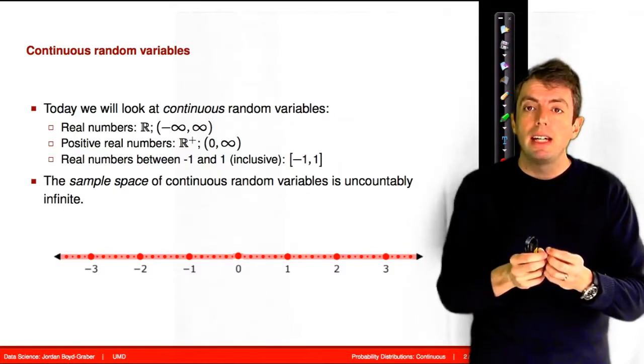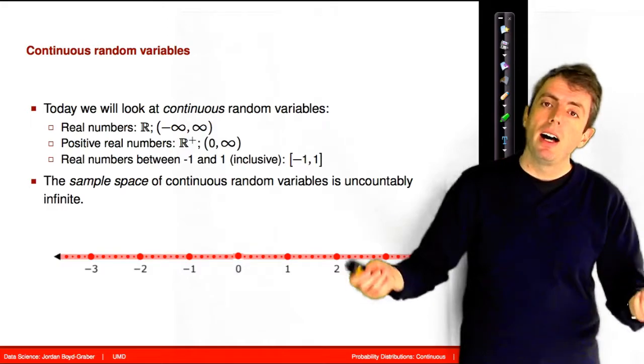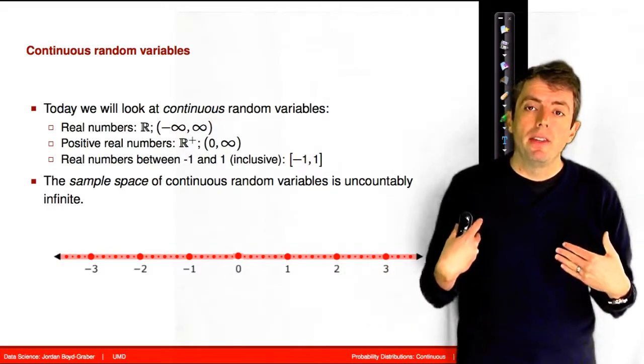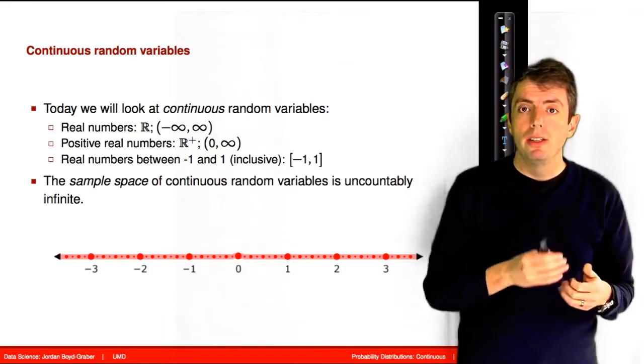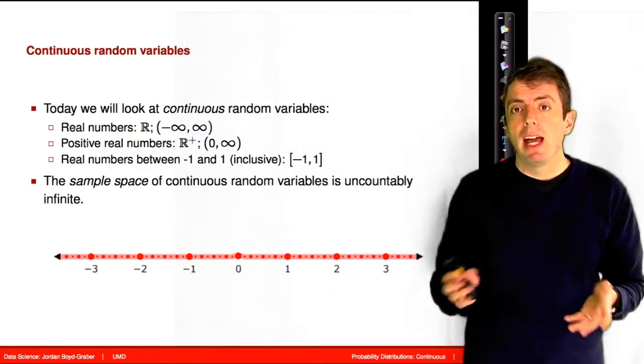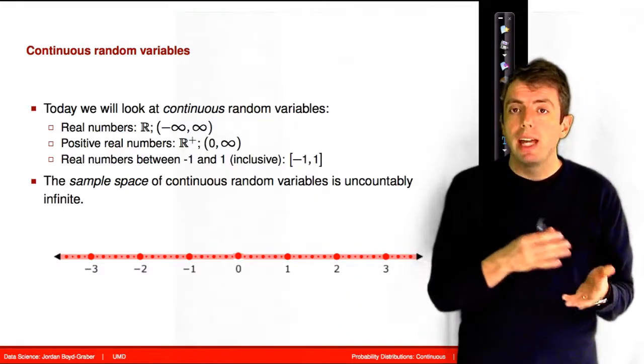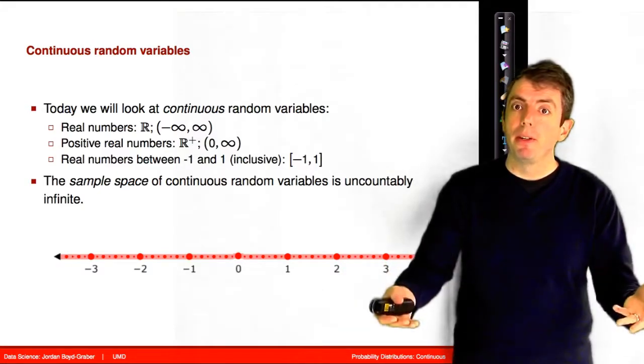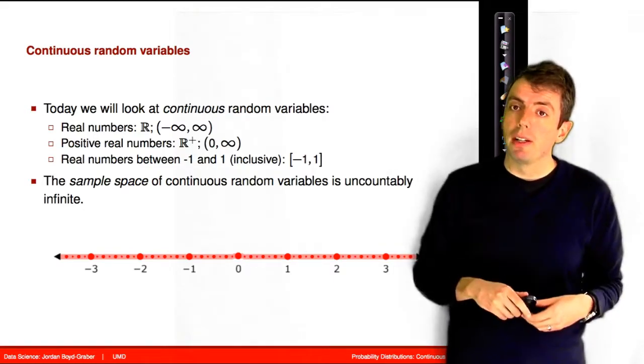Mathematicians call the outcome space of continuous distributions uncountably infinite. And so this is to make a distinction between, say, the outcome space of a Poisson distribution, which is any number 0, 1, 2, 3, 4, 5, on out to infinity, and any decimal point number. And so you can count the natural numbers, even though there are infinitely many of them, but you cannot count all of the decimal point numbers.